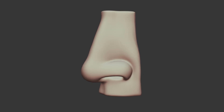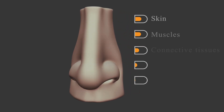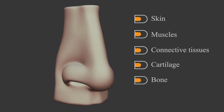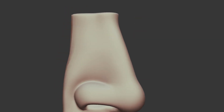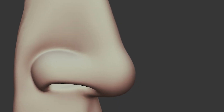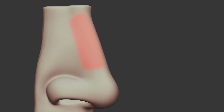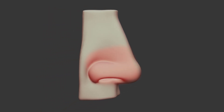The external part of the nose is what you see on the face. It is made up of skin, muscles, connective tissues, cartilage, and bone. It starts from the root of the nose, located between the eyes, and ends at the tip or apex of the nose. The bridge of the nose is the upper portion supported by nasal bones, while the lower portion is supported by cartilage.